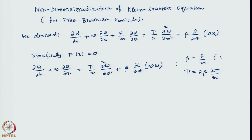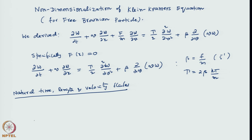Beta has a dimension of reciprocal time, and hence 1/beta provides a natural time scale for the system. We define natural time, length, and velocity scales — that is the way we always non-dimensionalize. First we look for what the natural scales are. The characteristic time T_c can be 1/beta. For velocity, the characteristic velocity is the thermal velocity, root(kT/M), which provides the natural velocity.